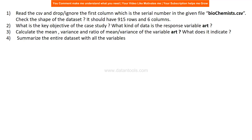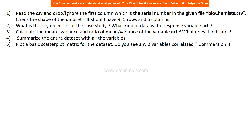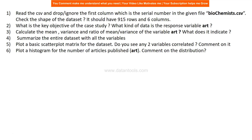Next, summarize the entire dataset including all variables — not just numerical ones, which is the default — but factor in all variable types for the summarization. Then plot a scatter plot matrix for the dataset and identify any two variables that appear correlated, commenting on your observations. Also plot a histogram for the number of articles published and comment on the distribution — whether it's right-skewed, left-skewed, normal, or flat.